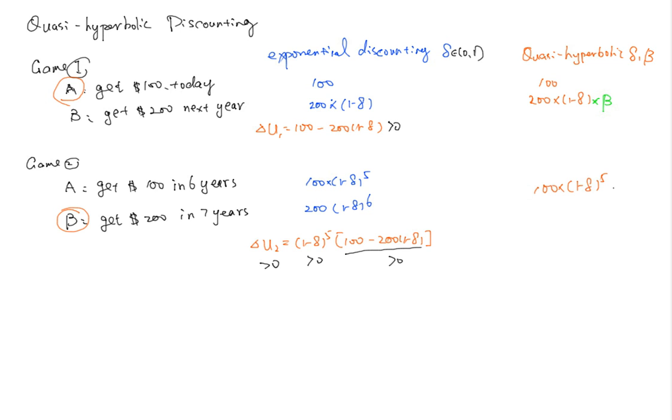Now here you get this from classical discounting and you get this from hyperbolic quasi-hyperbolic discounting here. Same thing, all future periods were discounted by beta.